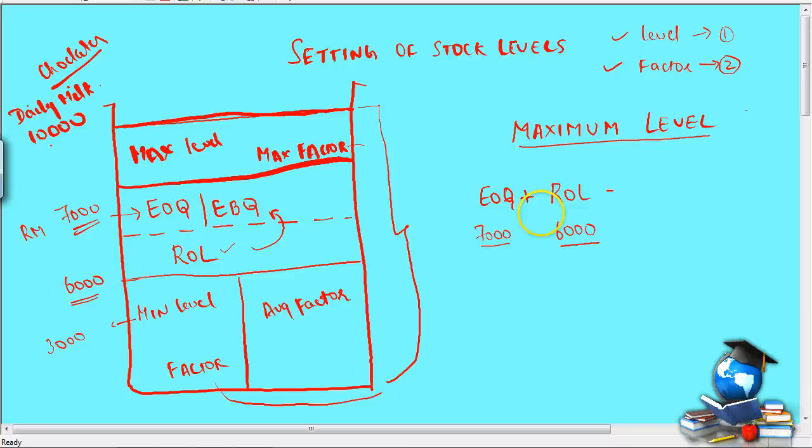From this thirteen thousand I have to maintain a minimum level till the time the stocks are arrived in the godown. Till the time the EOQ comes I still have to maintain some kind of a minimum stock, so that production is not stopped. So that production is not stopped, and that is why I am reducing the minimum factor, which is minimum consumption into minimum reorder period. Okay. So that will be say three days consumption, and per day let us assume thousand units, which are raw materials consumed. So this will be three thousand. So the net effect will be the maximum level of ten thousand. Okay. So this is how we have to work out.